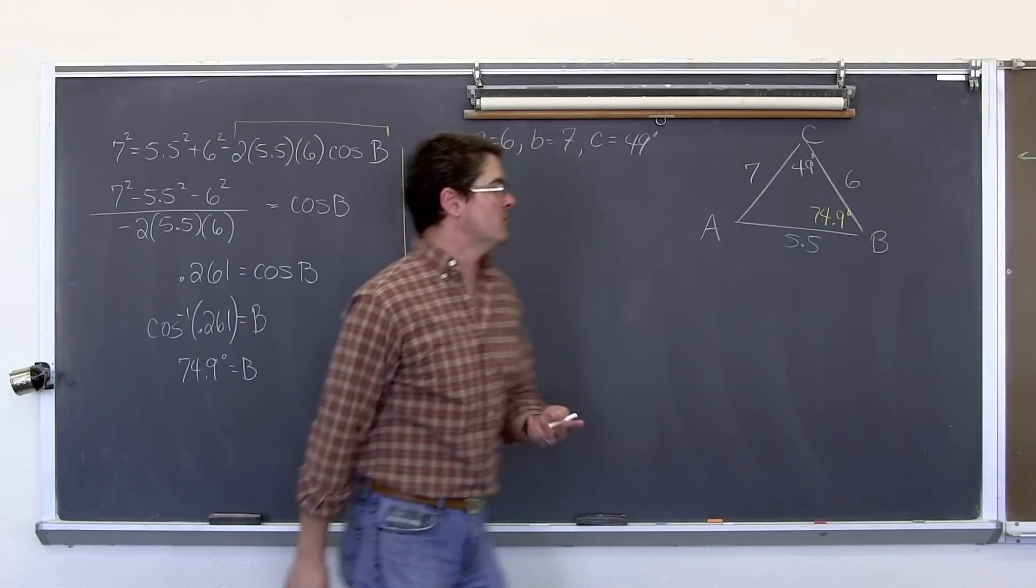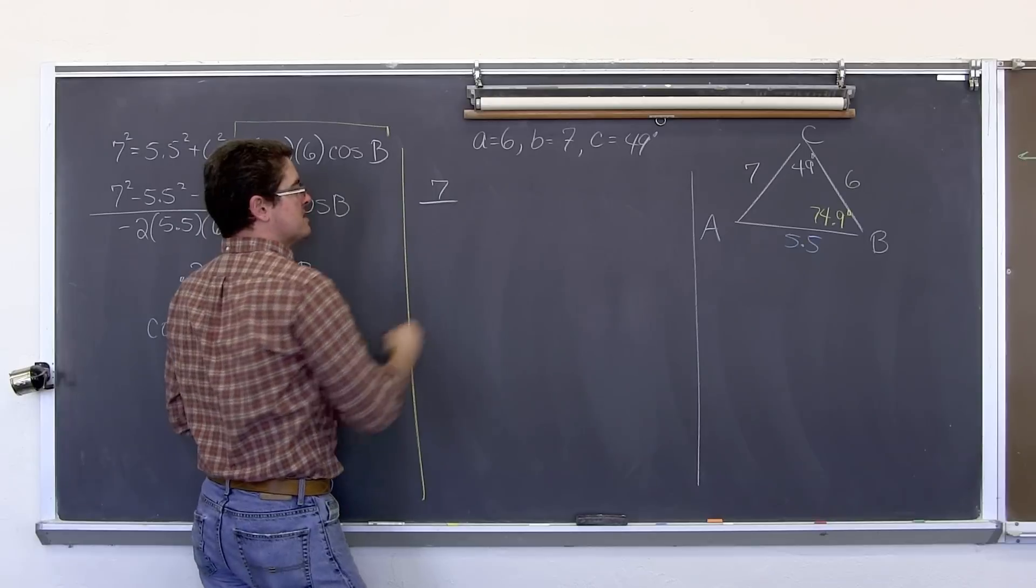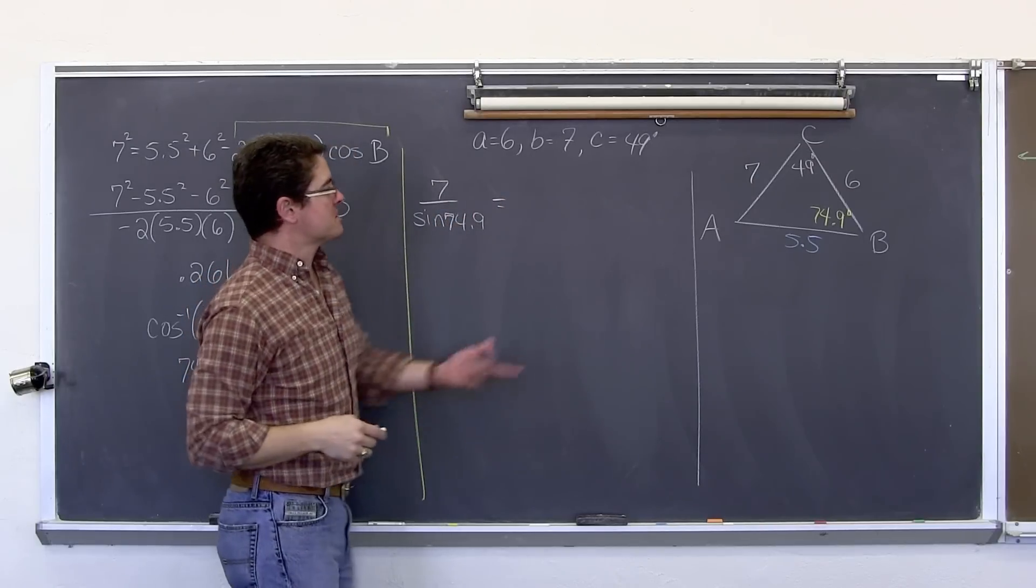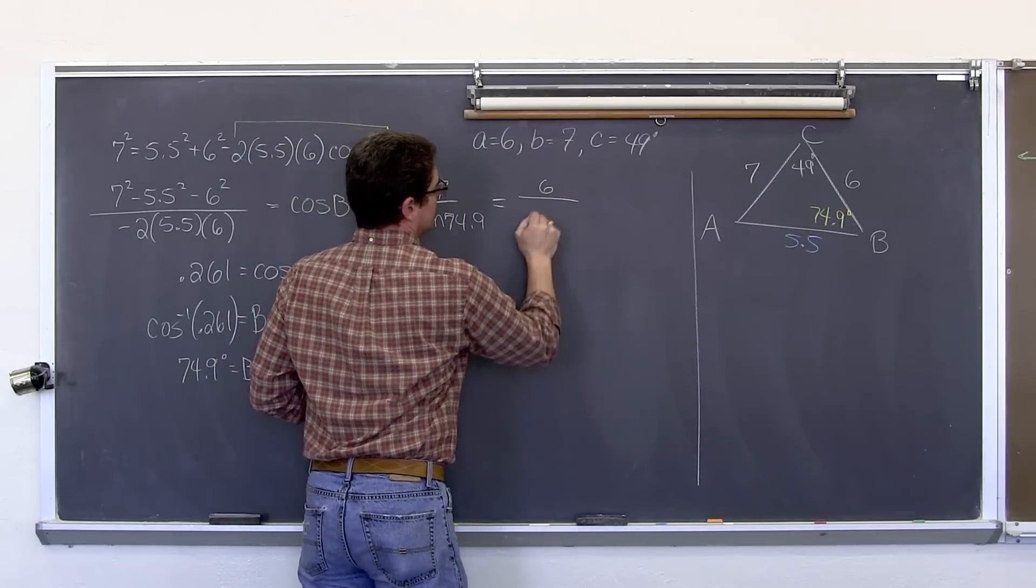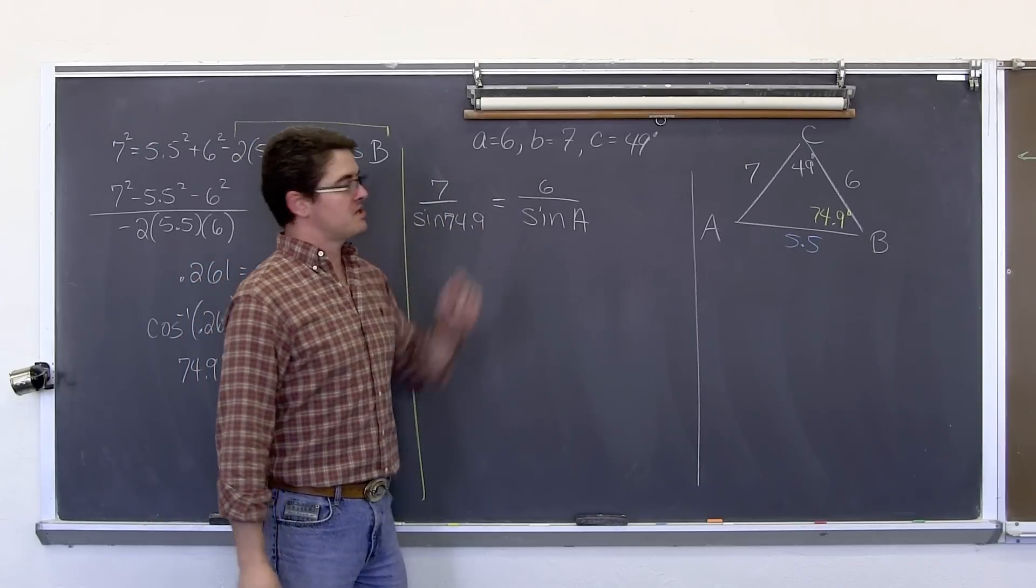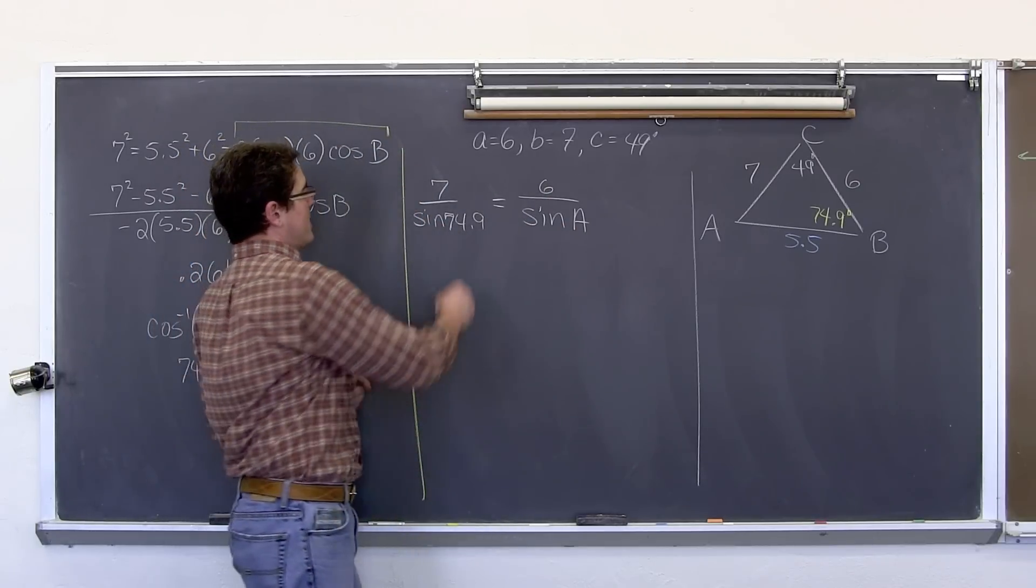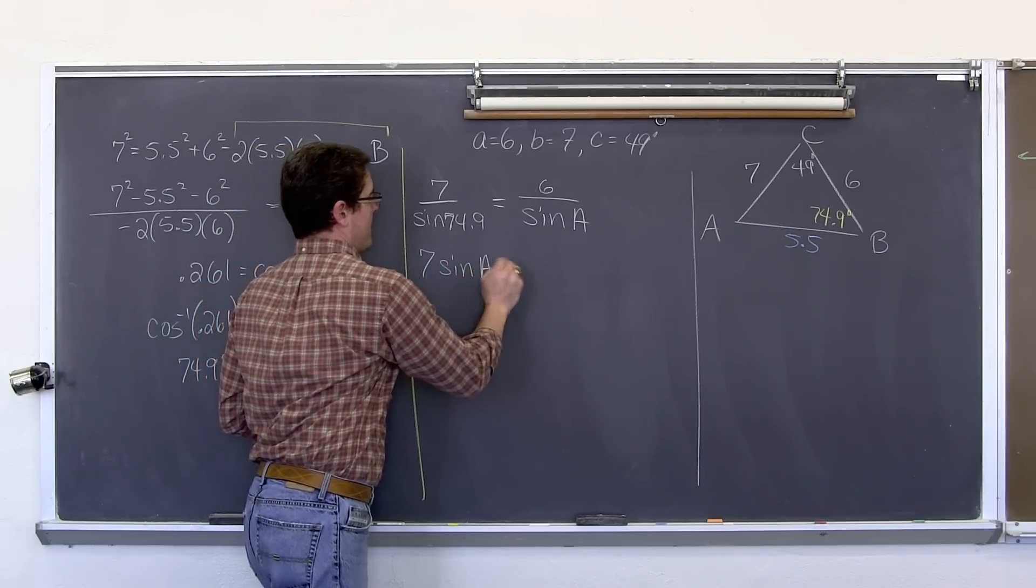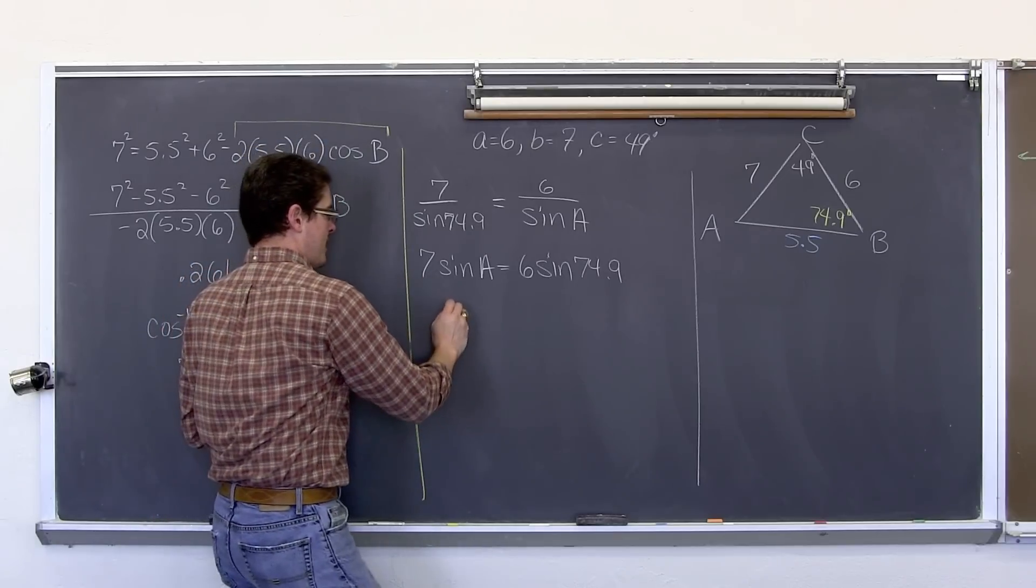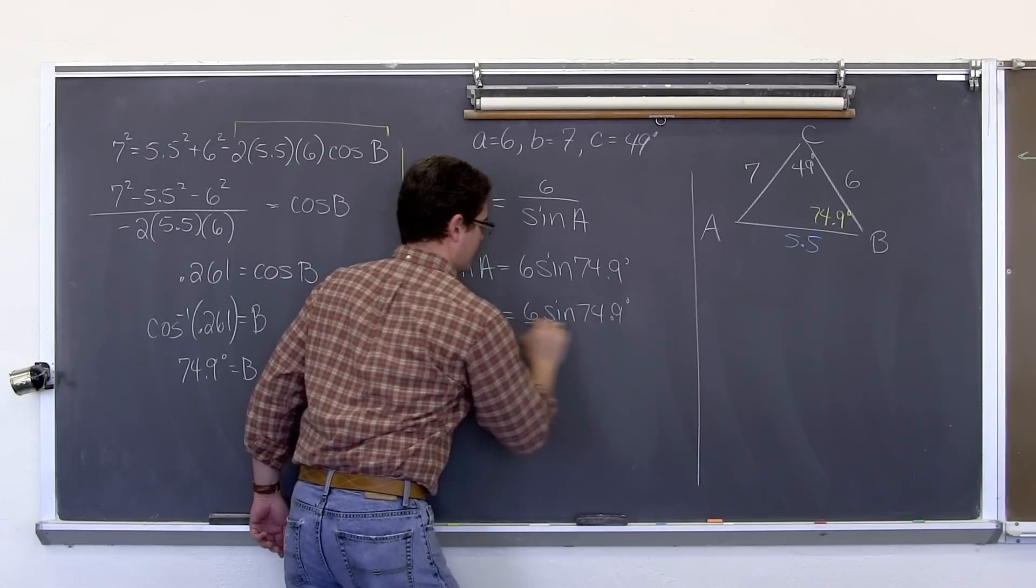So we are going to have 7 over the sine of 74.9 equals 6 over the sine of A. Our variable is in the denominator, and you can't solve for a variable when it is in the denominator. So I am going to cross multiply this equation or multiply both sides by the sine of A and both sides by the sine of 74.9 to cancel out that division. So we have 7 times the sine of A equals 6 times the sine of 74.9. We need to divide both sides by 7. So we have the sine of A equals 6 times the sine of 74.9 degrees divided by 7.